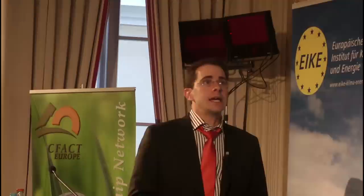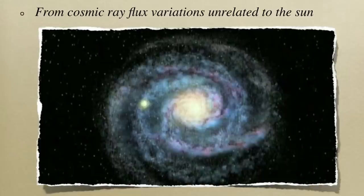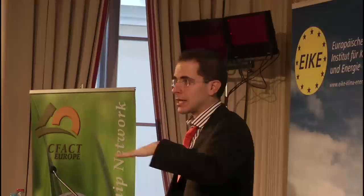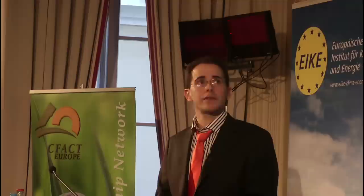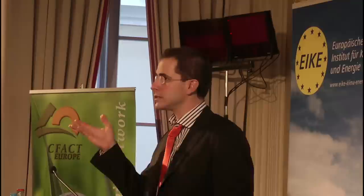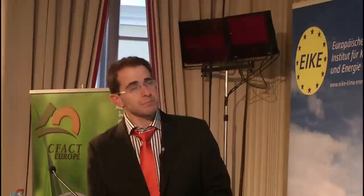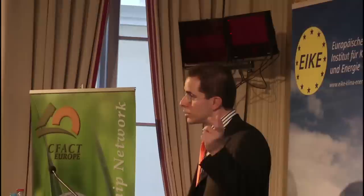Over geological timescales, the flux of cosmic rays reaching the Earth can change by a factor of a few. As we roam the galaxy, sometimes our environment has more stars exploding in supernova and sometimes fewer, so we sometimes get more cosmic rays and sometimes less. Here is a reconstruction of the cosmic ray flux based on iron meteorites, and on the other hand a reconstruction of the temperature using oxygen-18 to oxygen-16 isotope ratios in fossils. Clearly you can see a large correlation — a huge correlation — with the flux of cosmic rays reaching the Earth, whereas there was no correlation with CO2.